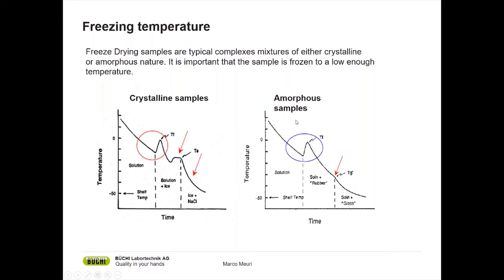Very similar is the story for amorphous samples. We go down, we see a small negative peak or super cooling, we freeze the sample to the freezing temperature, see a slight increase, but we're still not completely frozen. We need to go all the way down to the glass transition temperature or collapse temperature to make sure the sample is completely frozen and that we do not start with a half frozen sample. Otherwise our cake will not be very nice at the end.